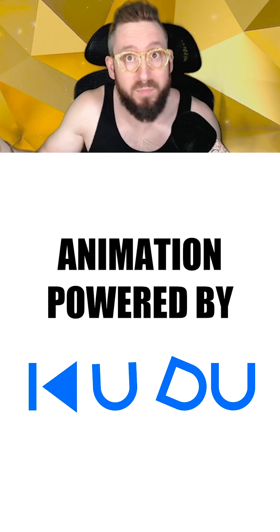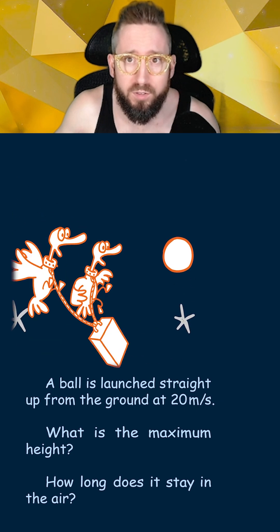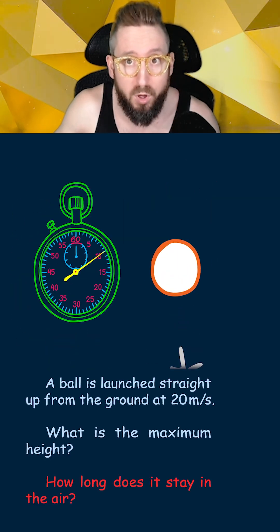Here's how to solve a 1D projectile motion problem in physics. In this example we have a ball being launched directly upwards and we're asked to figure out the maximum height it reaches as well as the total time the ball spends in the air.